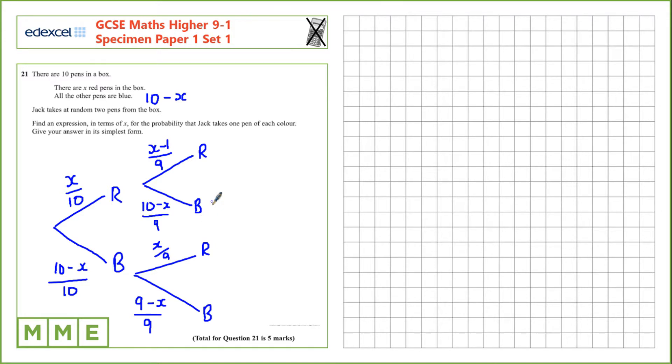Now we can find the ways that we can take one pen of each color. So either red-blue is selected, or blue-red is selected. In the case that we have red-blue, that's x over 10 multiplied by 10 minus x over 9. Or in the case that we have blue-red, that's 10 minus x over 10 multiplied by x over 9.